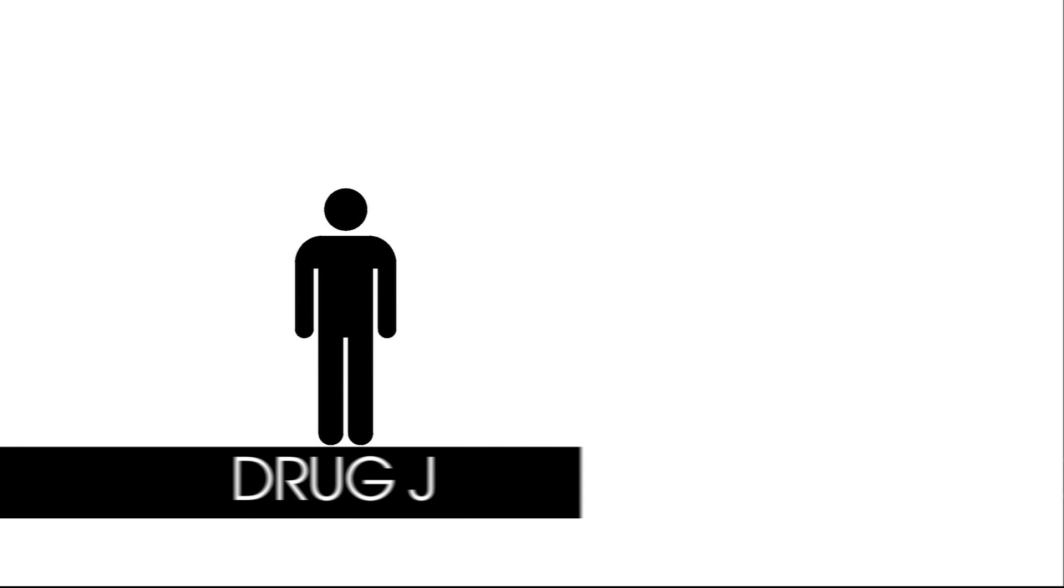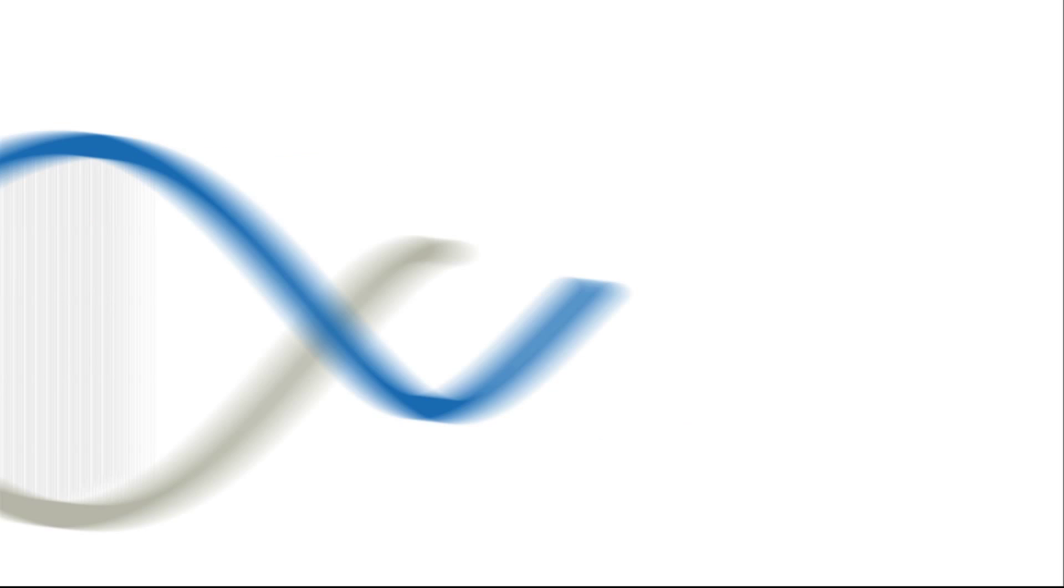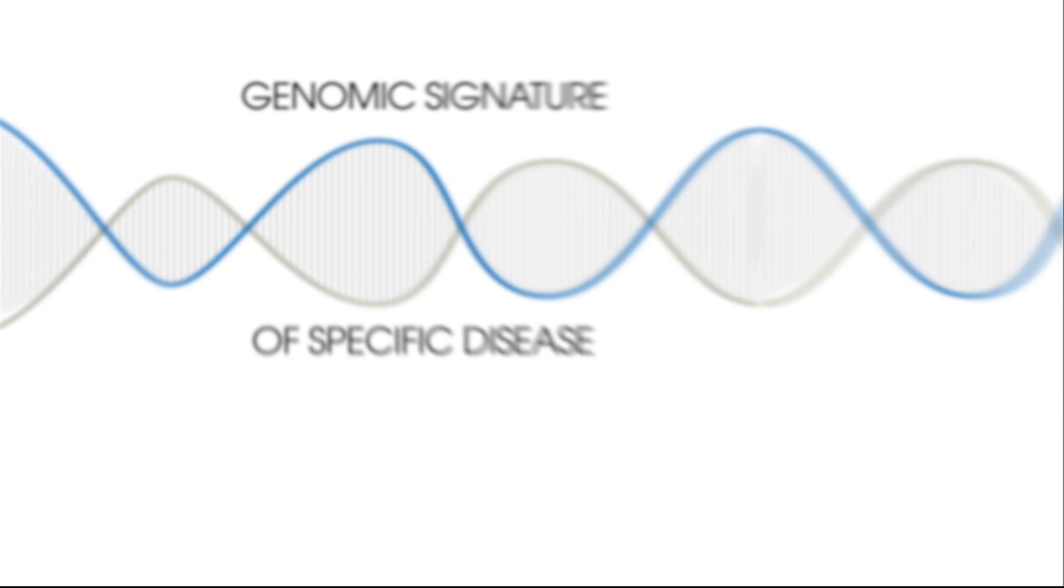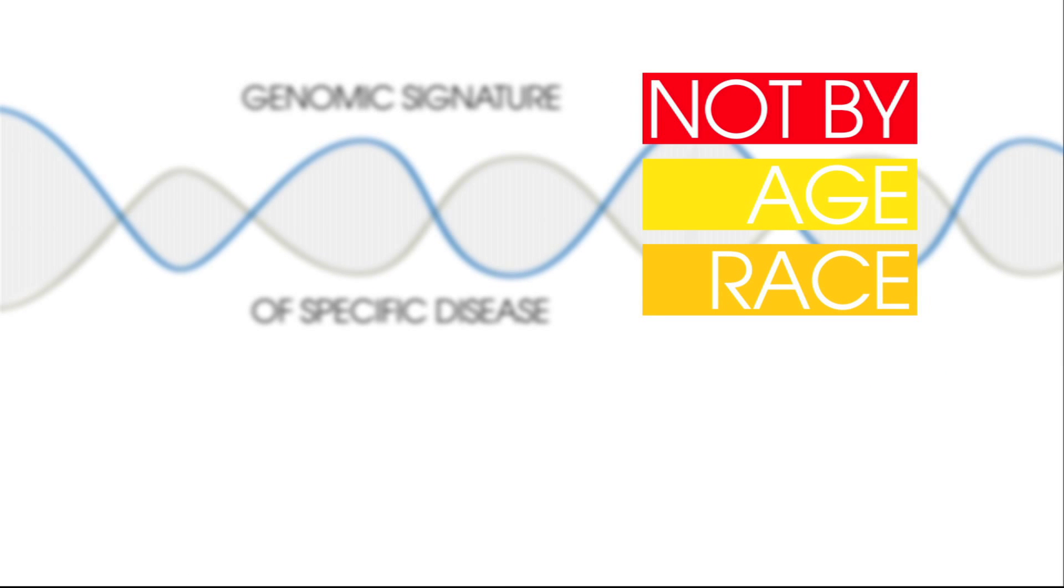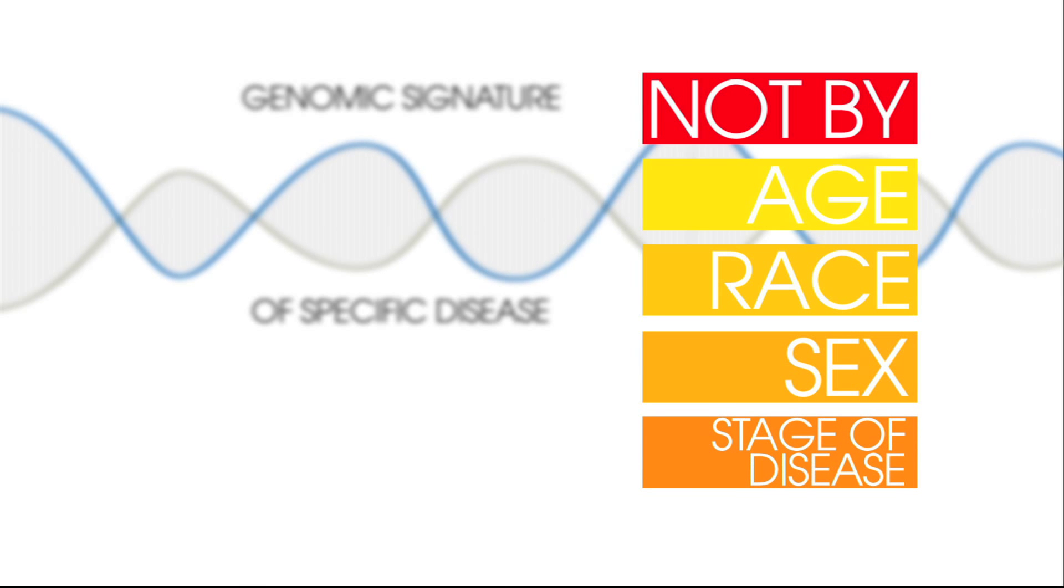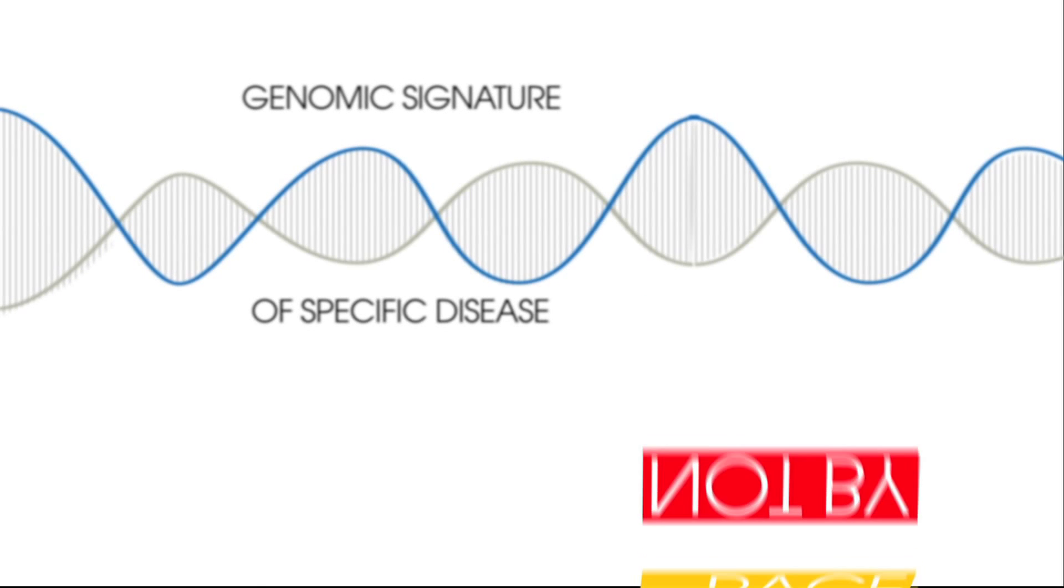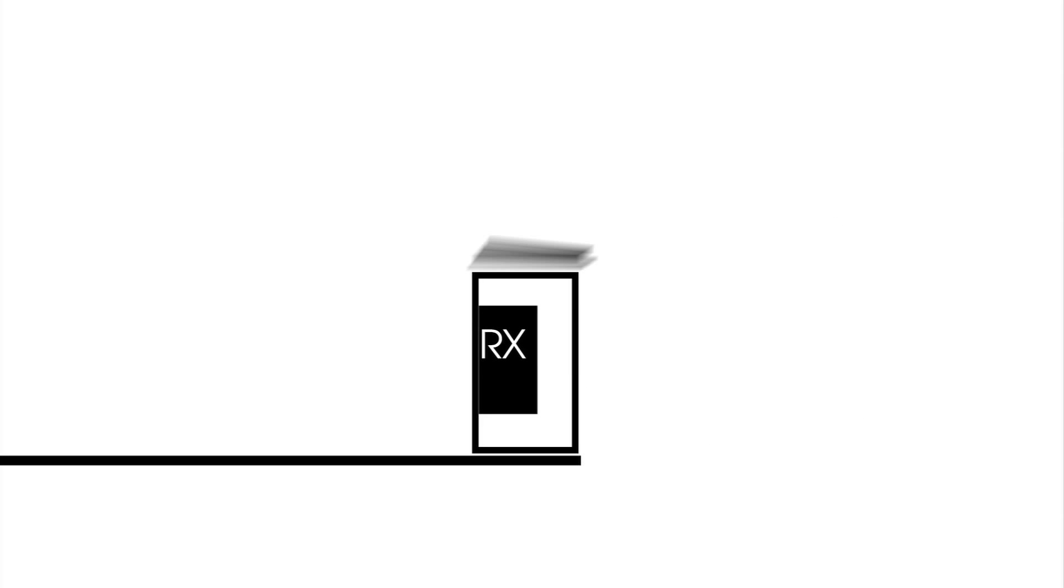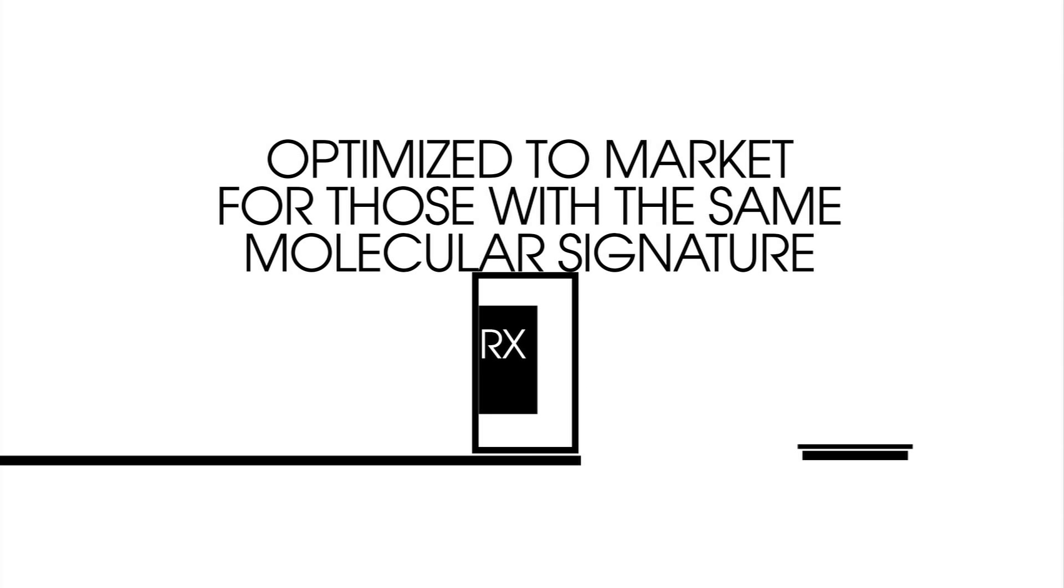Patients are enrolled in clinical trials based on the genomic signature of the specific disease they have, rather than by age, race, sex, and subjective stage of disease. As a result, the drug trial process is sped up and optimized to market for those with the same molecular signature.